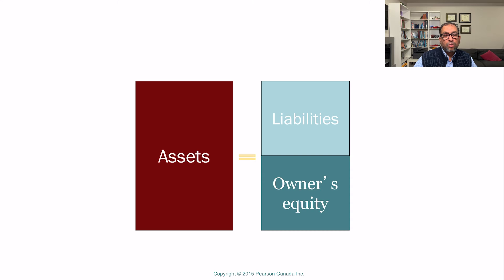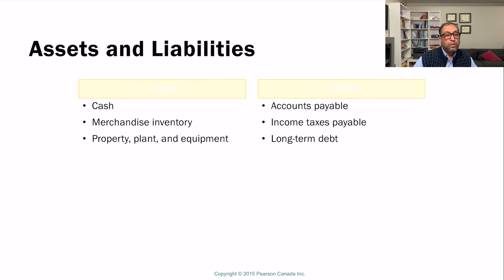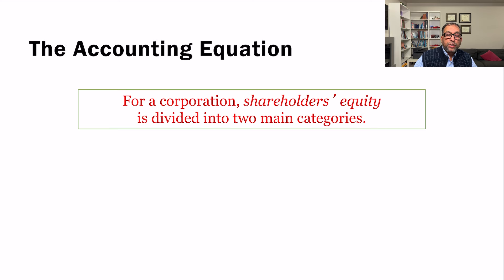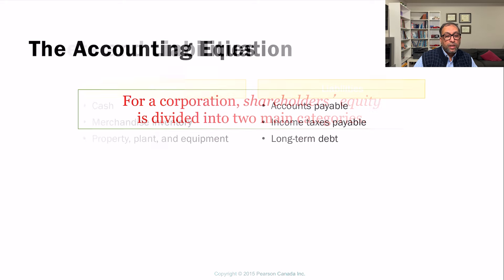We represent assets on one side — including cash, merchandising inventory, and property, plant and equipment — and liabilities on the other side, including accounts payable, income tax payable, and long-term debt. For a corporation, shareholders' equity is divided into two main categories: contributed capital and retained earnings.